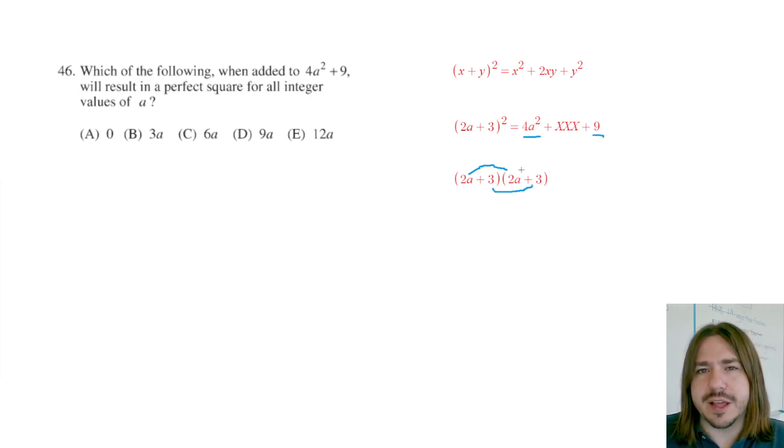So if we multiply the other two combinations here like 2a times 3, that would give you 6a. And 3 times 2a, that's going to also give you 6a.